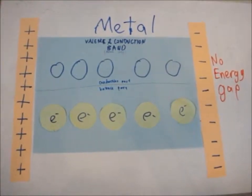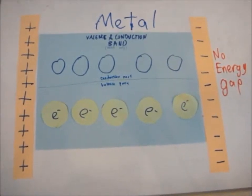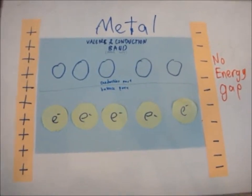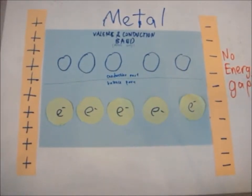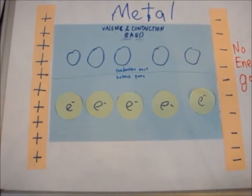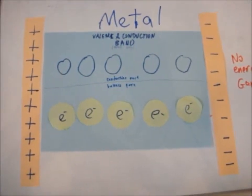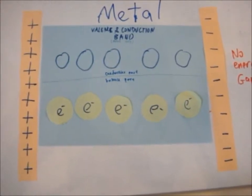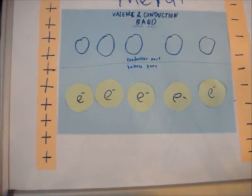This band theory can be used to explain the differing properties of conductors, semiconductors, and insulators. In conductors, the valence band is partially filled, and there are unfilled energy levels in the valence band. This means valence bands and conduction bands overlap in conductors, and there is no energy gap. Electrons can easily move from the valence band to the conduction band, and hence conduct electricity easily, providing metals with low resistance.